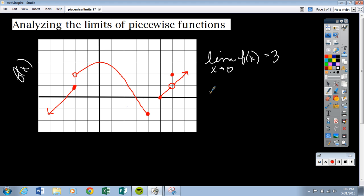But a lot of people have questions about what's happening sort of everywhere else. So let's say I ask you to find the limit as x approaches negative 2. Now, as we are looking at x approaching negative 2, there's a couple things happening here.